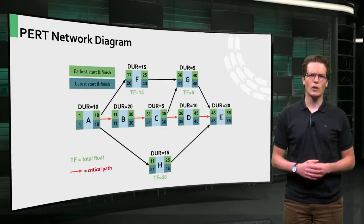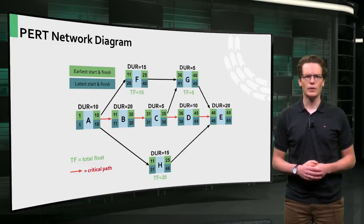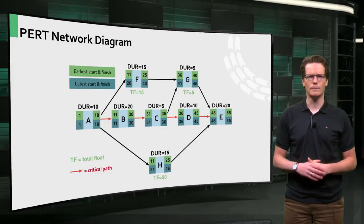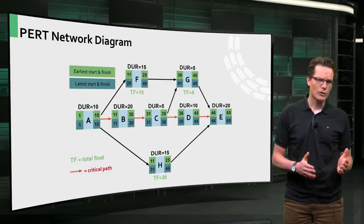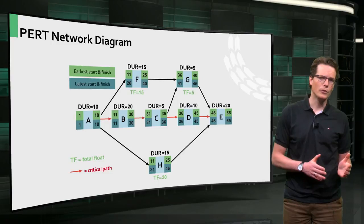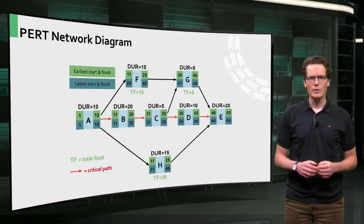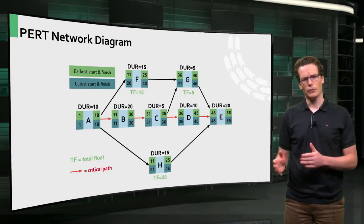Some tasks can also happen in parallel. In this example you can see that task F can be performed in parallel with task B and C. An electrical system of a house can be installed by one crew, while at the same time the plumbing system is installed by another crew.